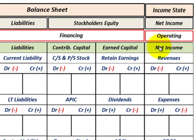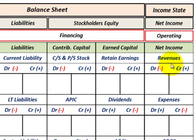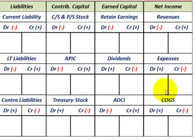Now let's move over to the income side — net income — which has revenues less expenses. Revenues work the same as our other accounts on the liabilities and stockholders' equity side: debit minus on the left side, credit plus to increase them. The contra accounts on the income statement would be expenses and cost of goods sold. Under expenses: debit plus, credit minus — working in just the opposite direction of revenues. Revenues are decreased by debiting, whereas expenses are increased by debiting. So you're essentially netting your expenses against your revenues to arrive at net income. Expenses and cost of goods sold both act as contra items reducing revenues.